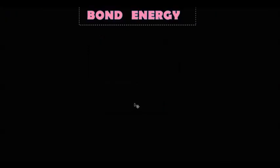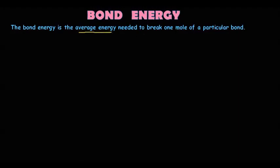Now let's understand what bond energy is. Bond energy is the average energy needed to break one mole of a particular bond. For example, the hydrogen–hydrogen bond in a hydrogen molecule has a bond energy of 436 kJ/mol — meaning to break this bond, we need 436 kJ/mol.